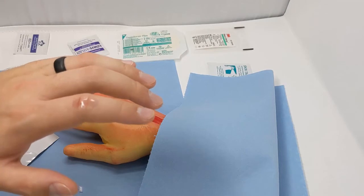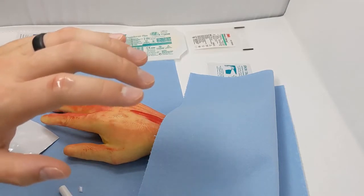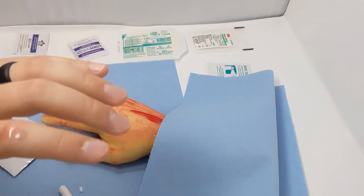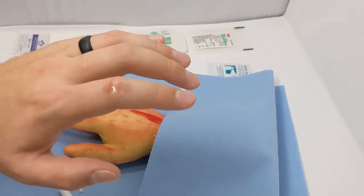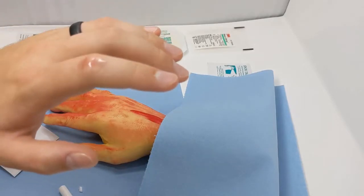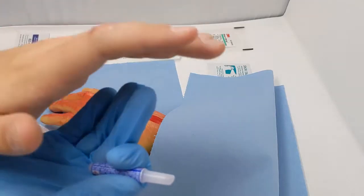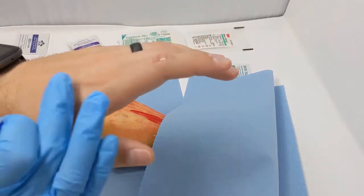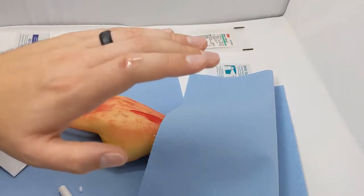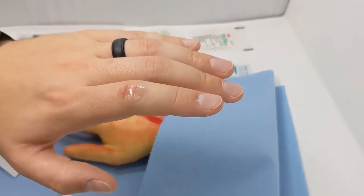If it looks at all dirty and you think it's a high likelihood that it's already contaminated, then we would not close it. We want to allow that wound to breathe and heal from secondary intention, where it allows drainage to come out of the wound. We would just clean it and cover it. It may create a little bit bigger of a scar, but that's the only downside of doing it that way.